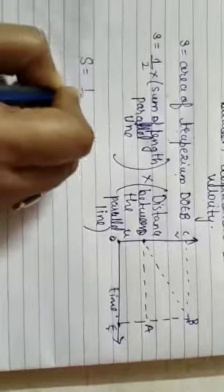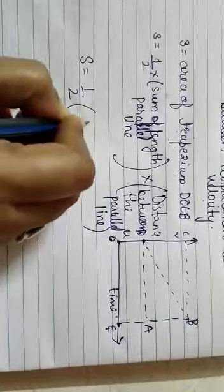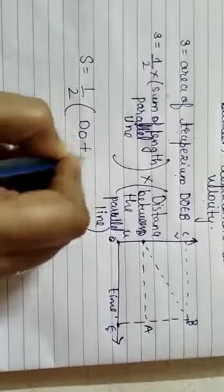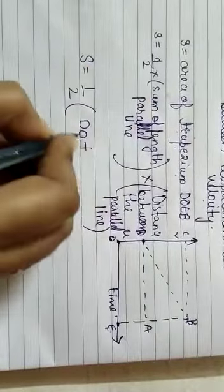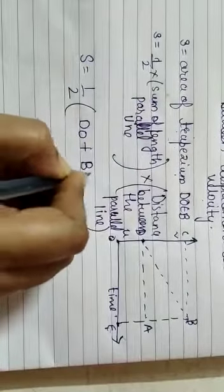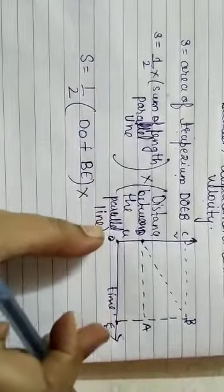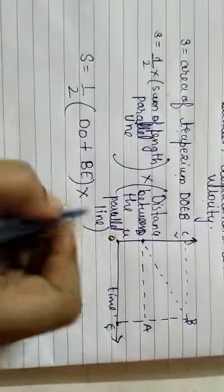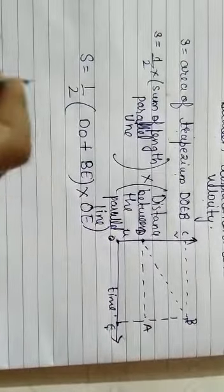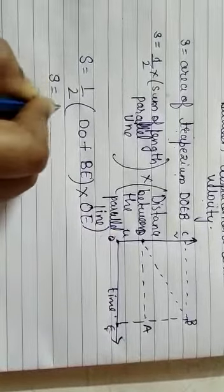So S is equal to half into DO plus, why plus? Because we are taking sum. Plus BE into what is the distance between? Distance between is OE.